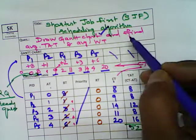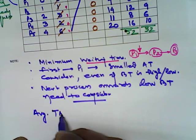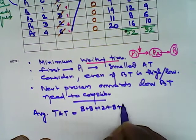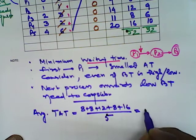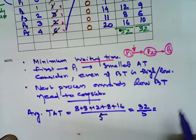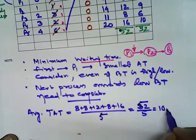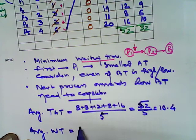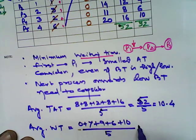Average turnaround time is nothing but 8 plus 8 plus 12 plus 8 plus 16 divided by number of processes which is 5. So that is 52 by 5 is equal to 10.4. Then average waiting time is 0 plus 7 plus 9 plus 6 plus 10 divided by 5. How much it is coming? That is 32 divided by 5, that is 6.4.